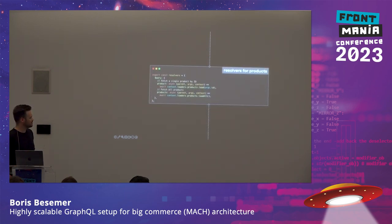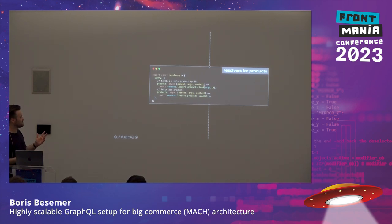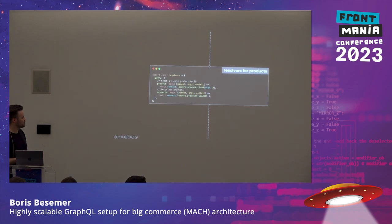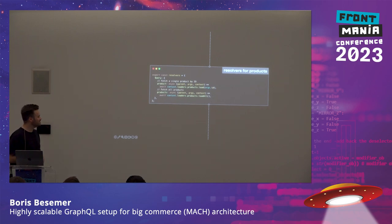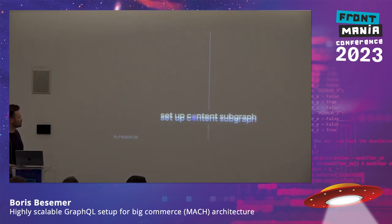We've modeled our data, so we know how it's going to look. But we need to know how we're going to fetch this data. We have two resolvers: one fetches a single product by ID using a context loader that hits Commerce Tools or another service, using the ID argument from the type definitions. The other does a load-all with no arguments because we just want all products.